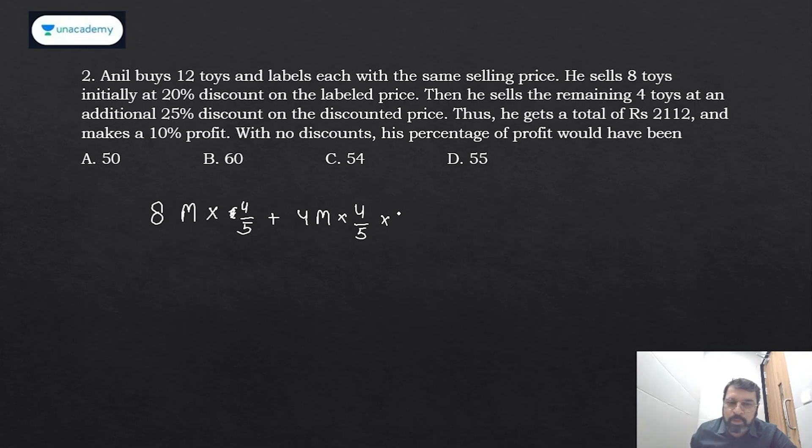Remaining 4 with marked price M are given additional 25% discount, so 4/5 and 25% discount more—that is 1/4 discount—so it will be 3/4. This is your complete selling price.